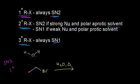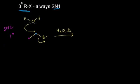In the SN2 mechanism, the nucleophile attacks the partially positive carbon, and at the same time the electrons kick off onto the leaving group. This is a concerted mechanism: the water molecule adds at the same time the bromine leaves. The water molecule has now added to the original molecule, and it's going to have an extra lone pair of electrons, giving it a +1 formal charge on the oxygen.